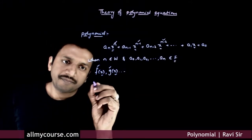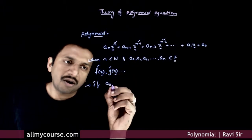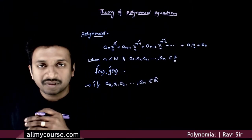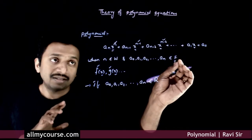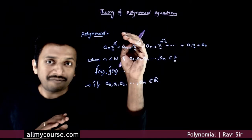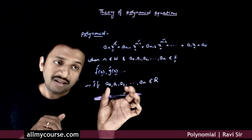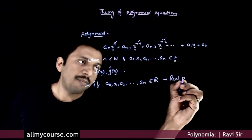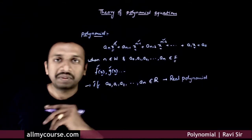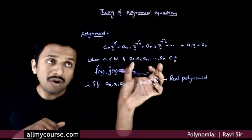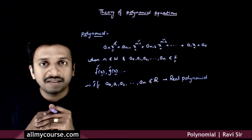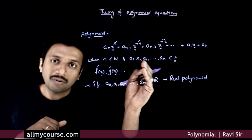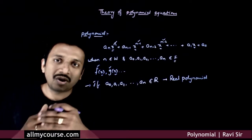Next, if the numbers a_0, a_1, a_2, up to a_n belong to the set of real numbers — they can belong to any number set F and the polynomial is defined on that set F — if these coefficients belong to real numbers, then the polynomial is called a real polynomial. If all the coefficients belong to the set of complex numbers, then it is called a complex polynomial.